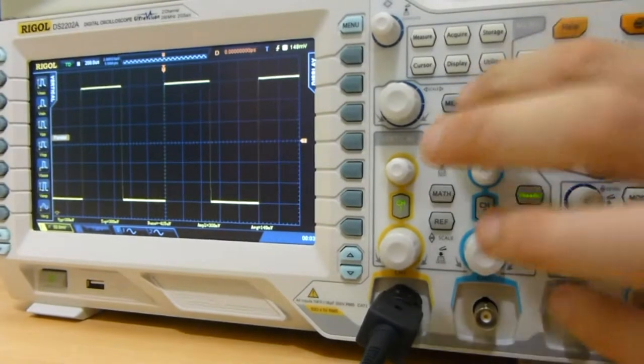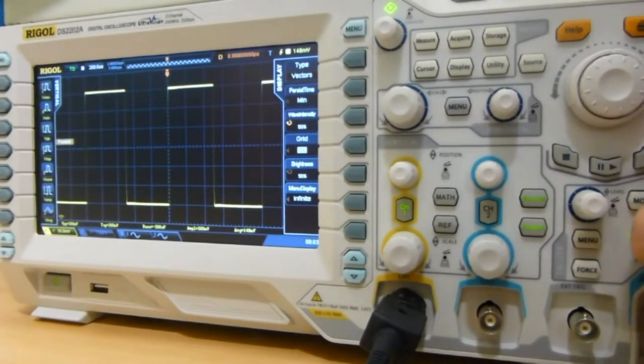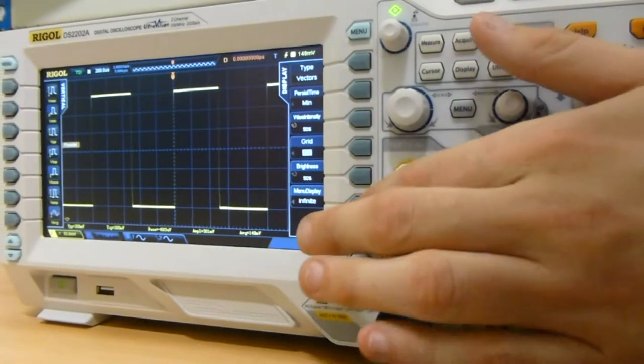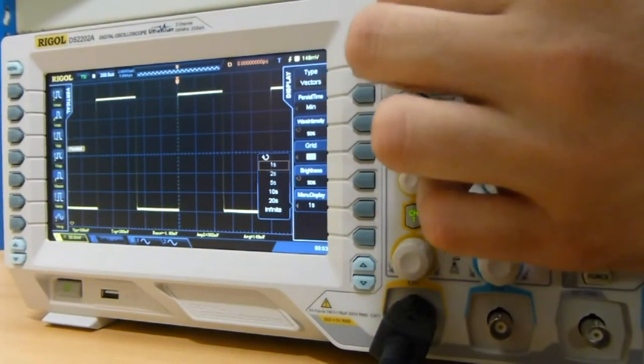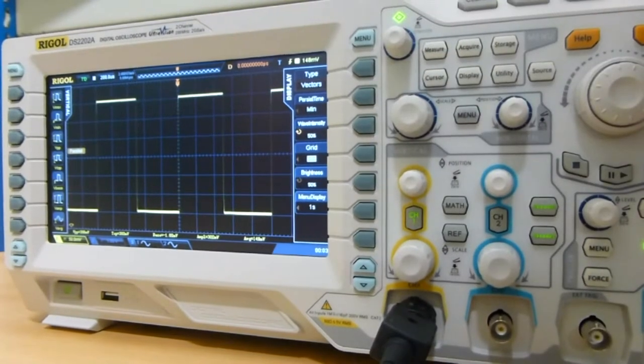So with the display menu we can also set the amount of time that the menus display on the screen. That way you can see all of the trace all of the time.